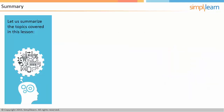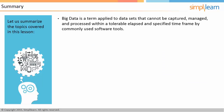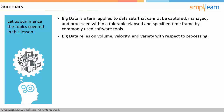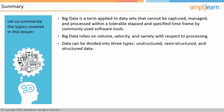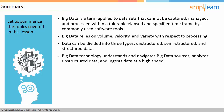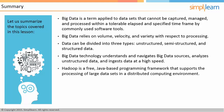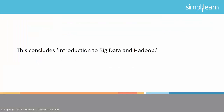To summarize: Big Data is a term applied to data sets that cannot be captured, managed, and processed within a tolerable elapsed time frame by commonly used software tools. Big Data relies on volume, velocity, and variety with respect to processing. Data can be divided into three types: unstructured, semi-structured, and structured. Big Data technology understands and navigates Big Data sources, analyzes unstructured data, and ingests data at high speed. Hadoop is a free, Java-based programming framework that supports the processing of large data sets in a distributed computing environment. This concludes the Introduction to Big Data and Hadoop; the next lesson will focus on Hadoop architecture.